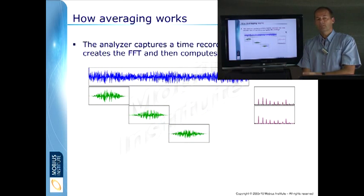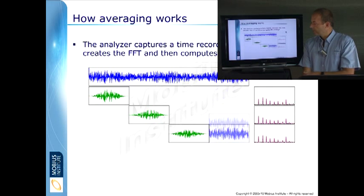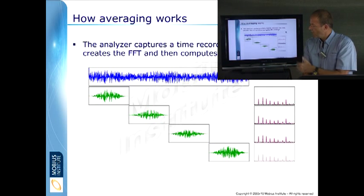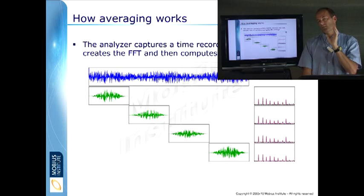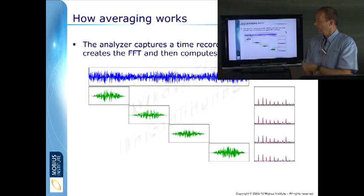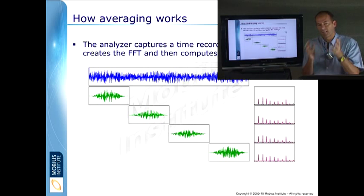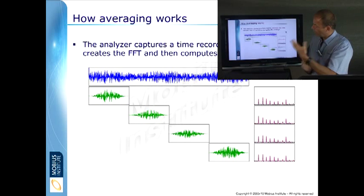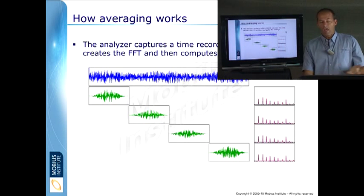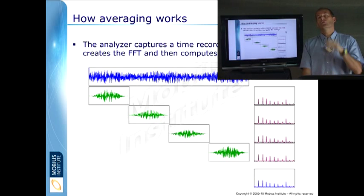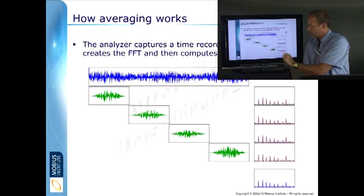And then it does it again. So if you were to ask for four averages, it would end up with these four spectra. Mathematically it's done a little bit differently, but just for the point of this demonstration, we end up with four. And then from those four, we keep an average spectrum.